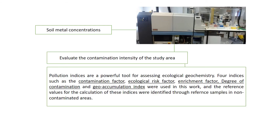The total metal concentrations in soil are defined using inductively coupled plasma mass spectrometry (ICP-MS) for more than 20 samples in the study area. In order to evaluate the contamination intensity of the study area, we used five pollution indices: the contamination factor, ecological risk factor, enrichment factor, degree of contamination, and geoaccumulation index.